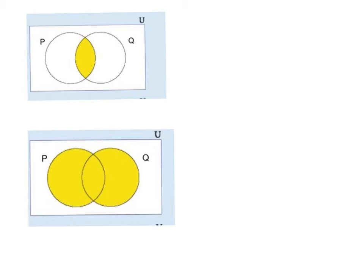Now look at diagram number 3. The yellow part is between P and Q. How can you write it down using math symbols? What is the part between P and Q? Something common for P and Q — this part in the middle is named intersection. So let's write it down: P intersection Q, and this is the answer for this diagram.